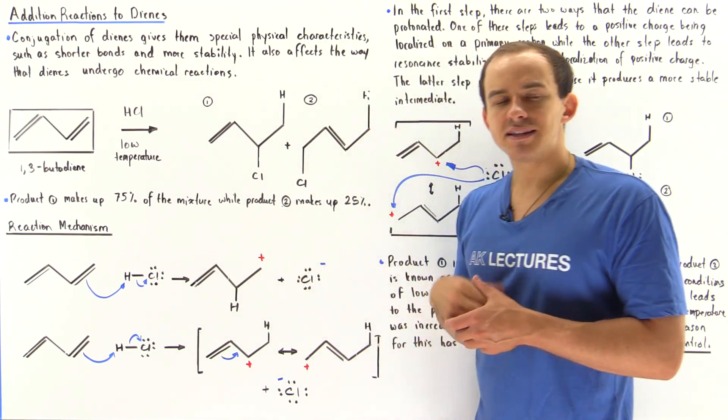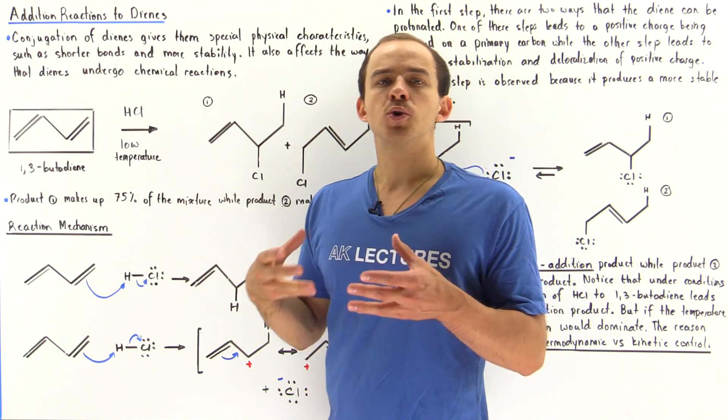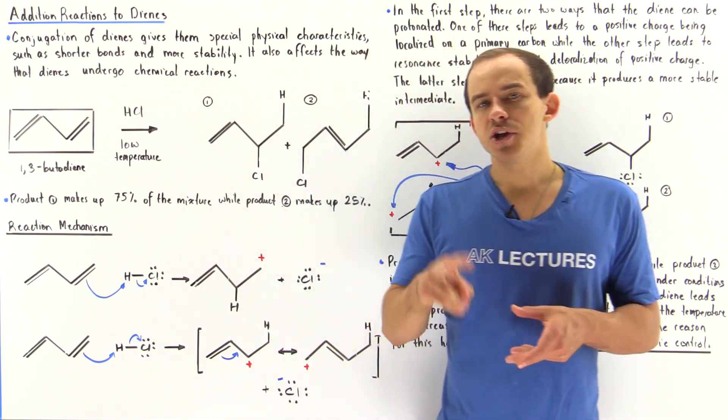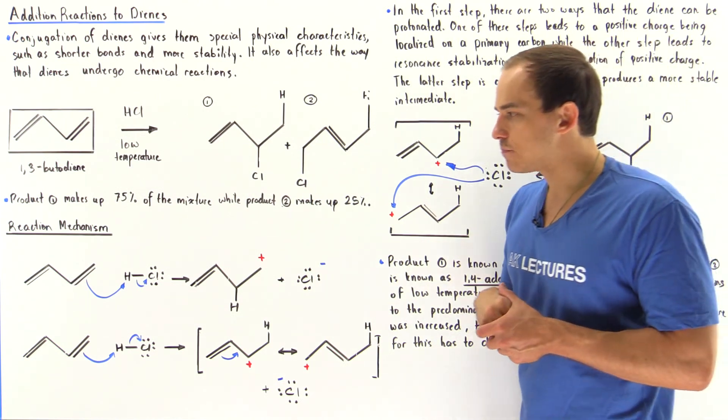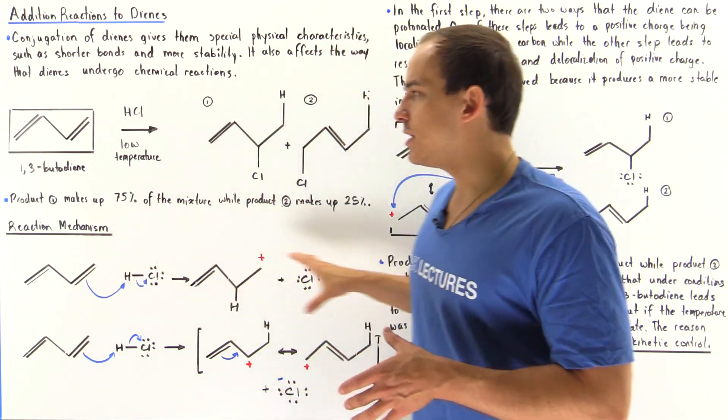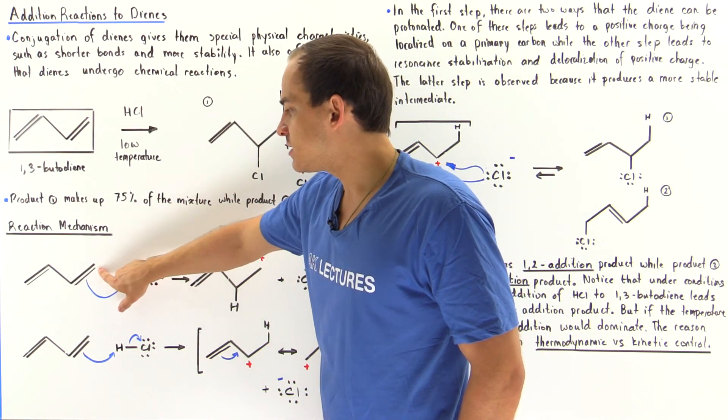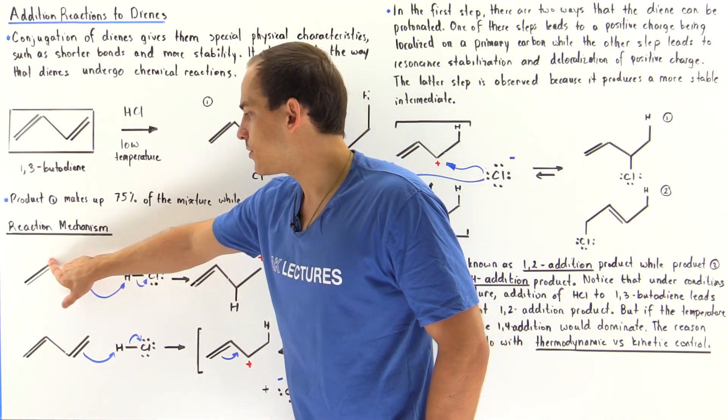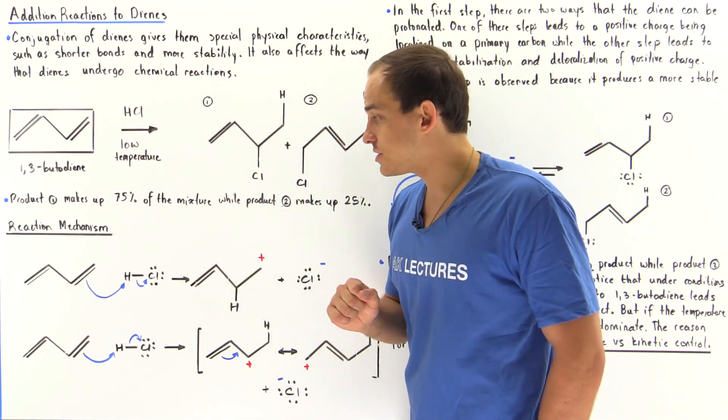Let's begin by discussing the first step of this reaction, known as the protonation step. There are two possibilities for the protonation step. Let's look at possibility number one. We have our 1,3-butadiene: the first carbon, second carbon, third carbon, and fourth carbon.